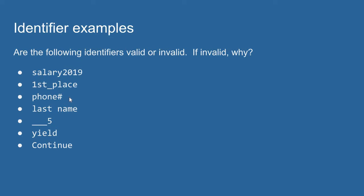The next identifier, we have phone and then a hash symbol for number. The hash character is not one of the valid characters we can use, so this is not a valid identifier. Our next example, last name with a space. The space character is also not a valid identifier. You can't put a space between two parts of an identifier. Python would look at last name and try to assume that this was two separate identifiers.